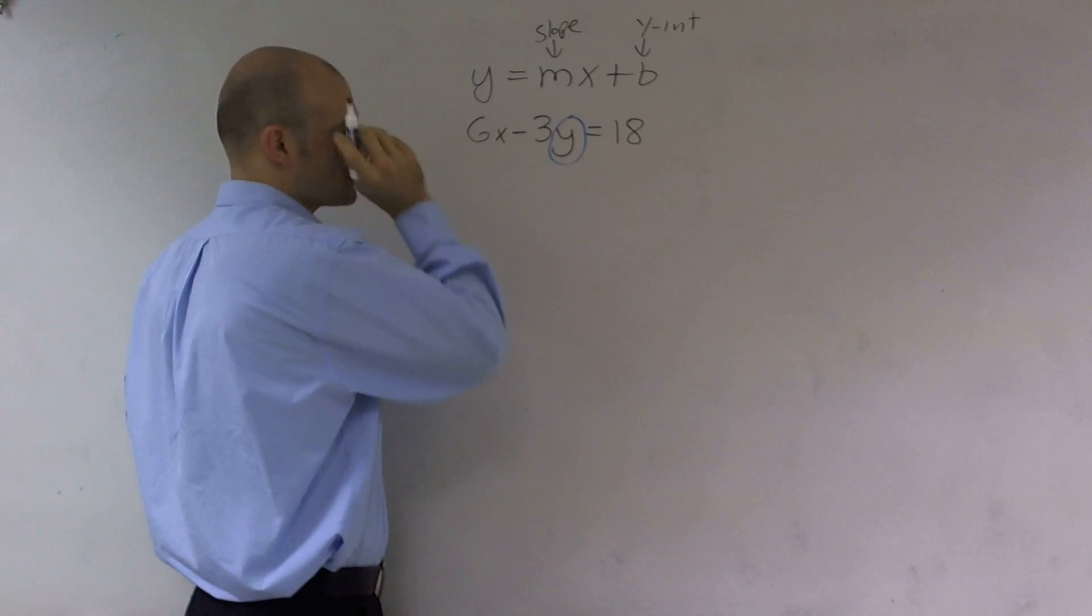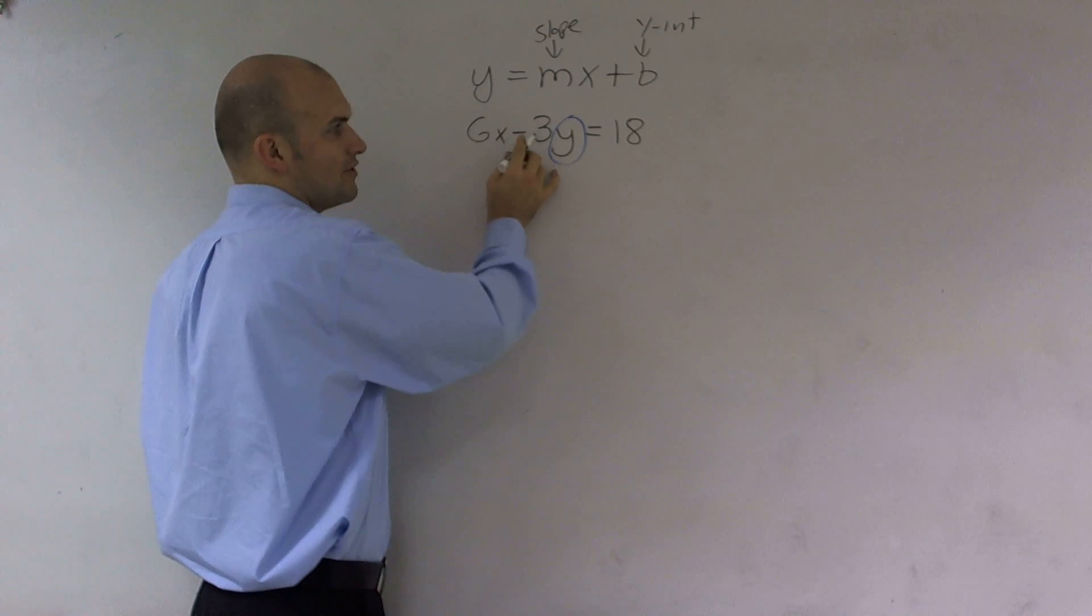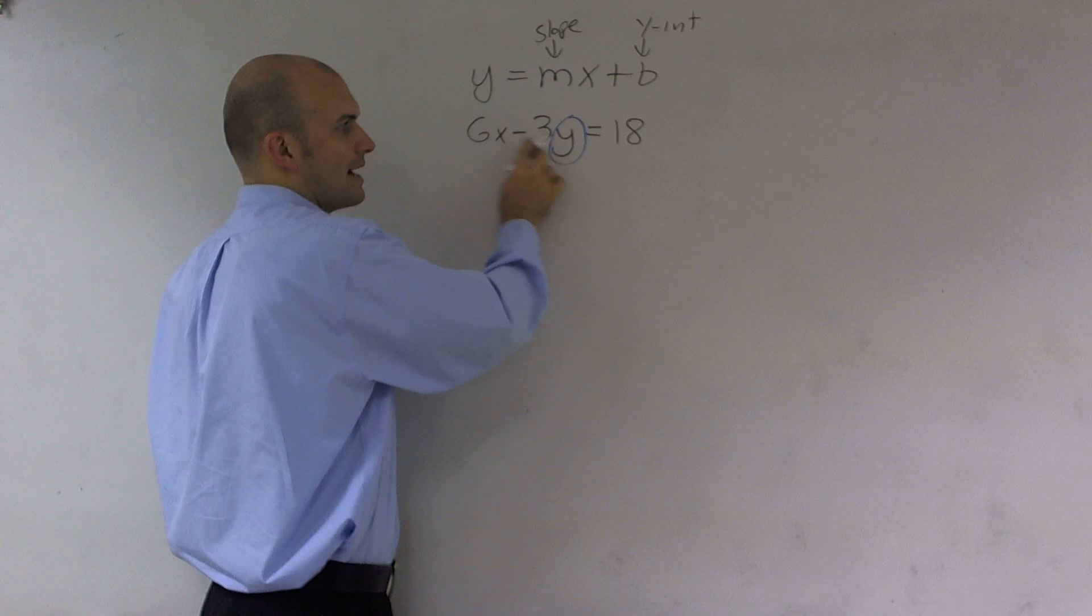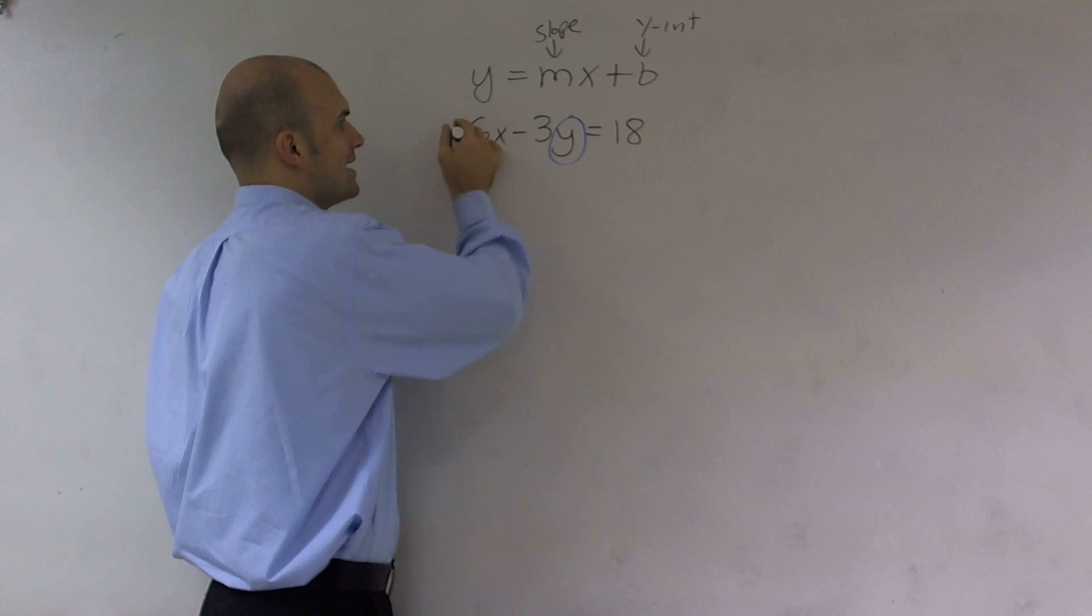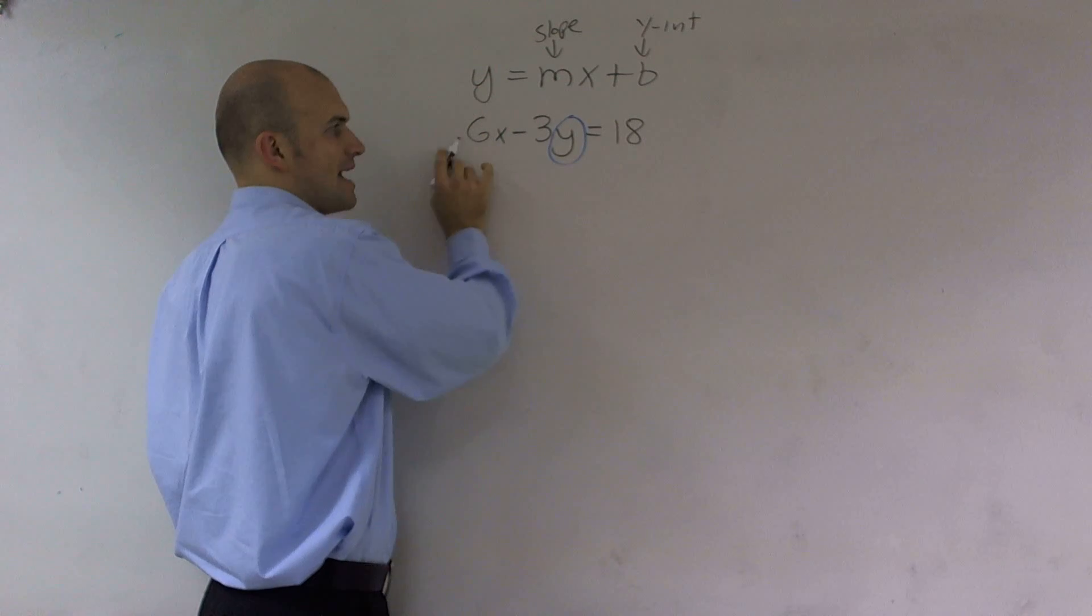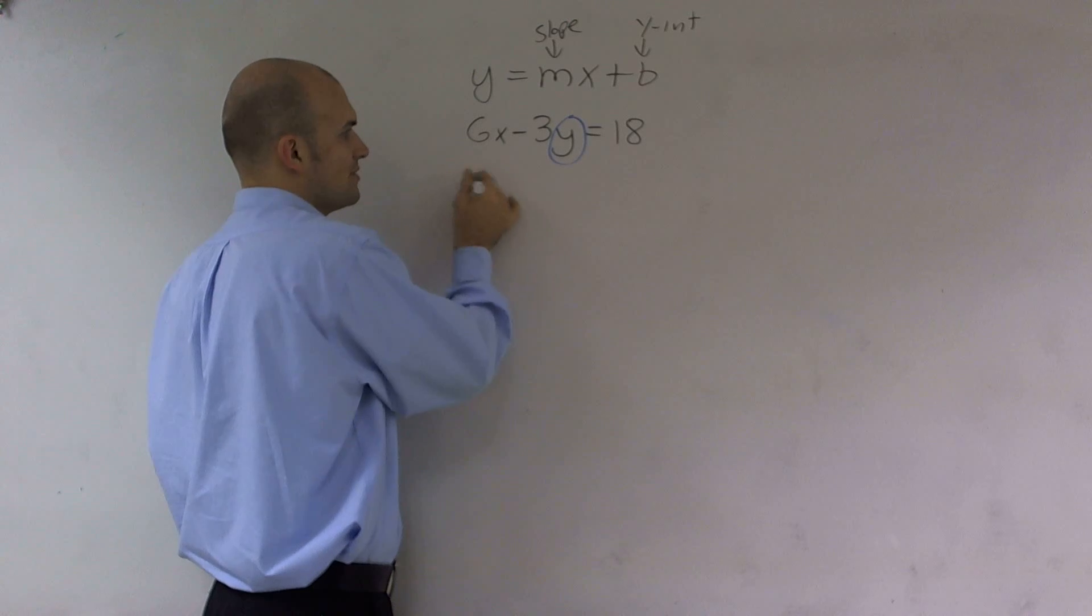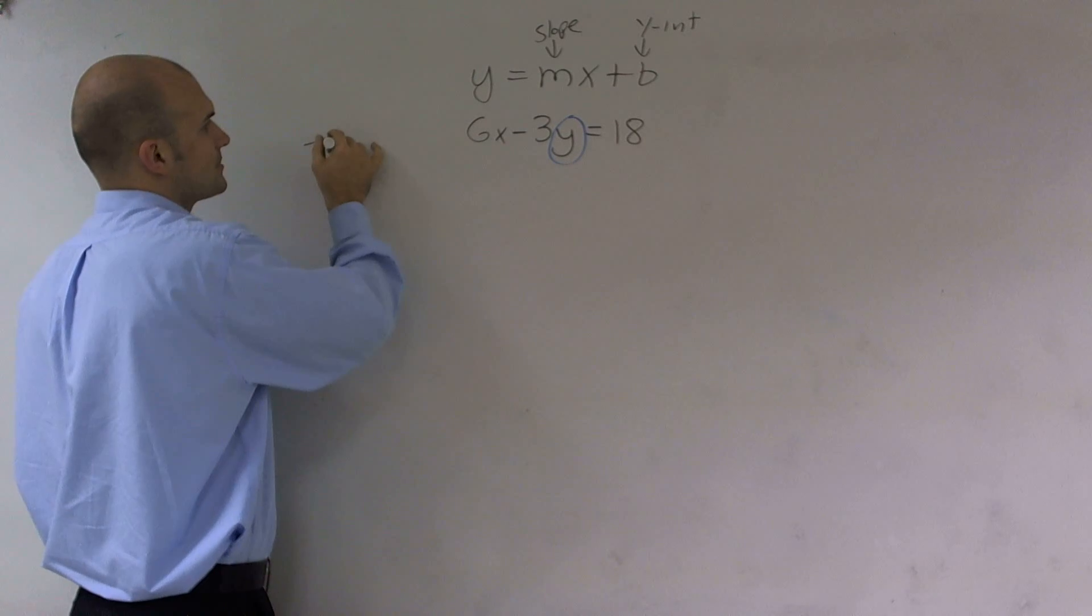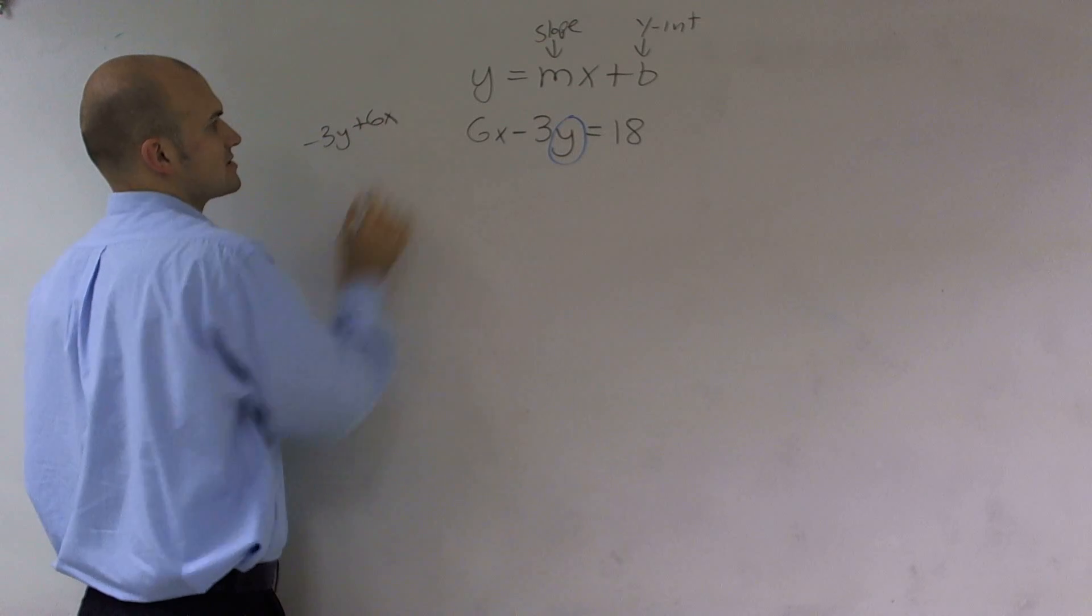So if you look at it, you can see there's a couple things that are happening to it. First, I'm multiplying this y by a negative 3. I'm also adding a positive 6 to it, because I can rewrite this as 3y plus 6x.